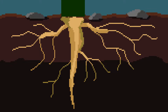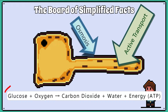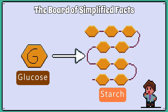The roots are underground so there is almost no light there, and root hair cells don't have chloroplasts because it would be a waste. Root hair cells need glucose for aerobic respiration to drive active transport. The plant also needs to convert glucose into starch to store energy, and starch is stored in more places than the leaf.